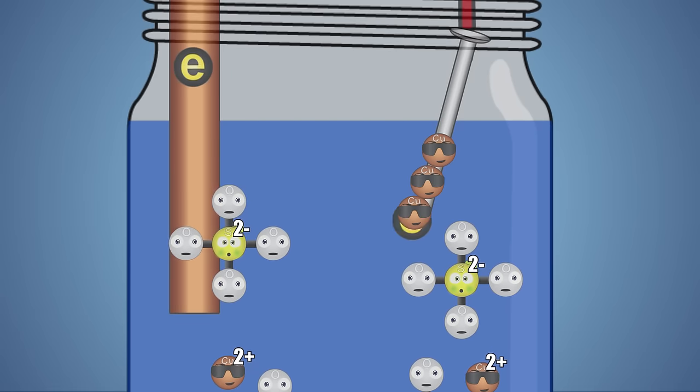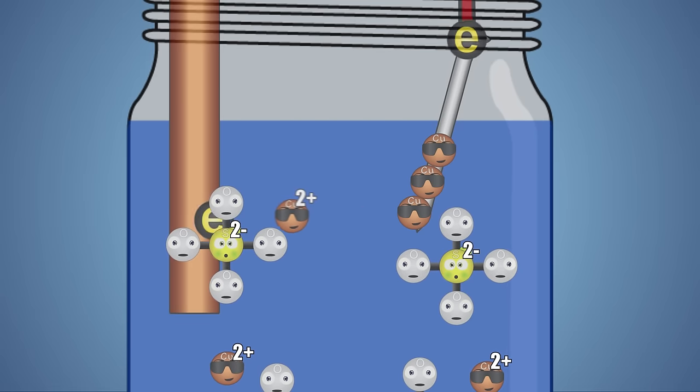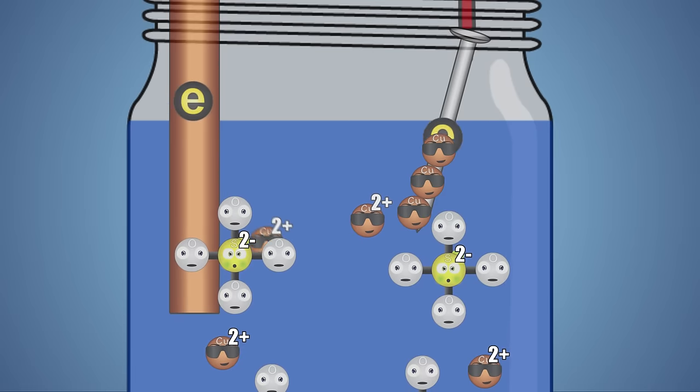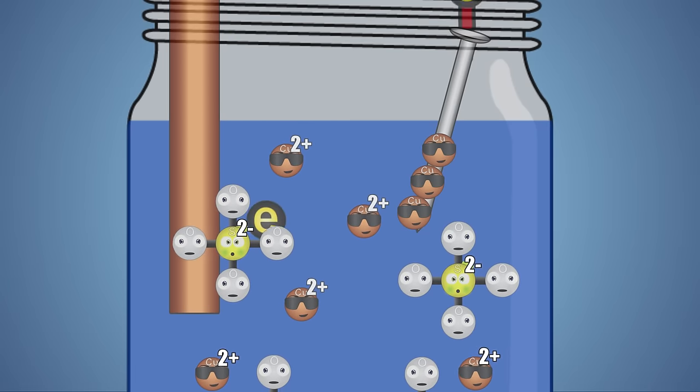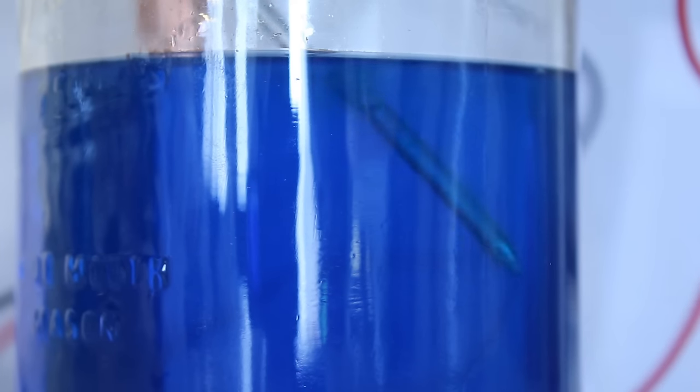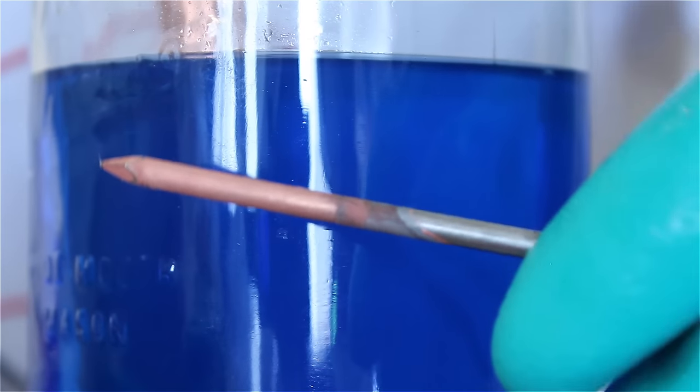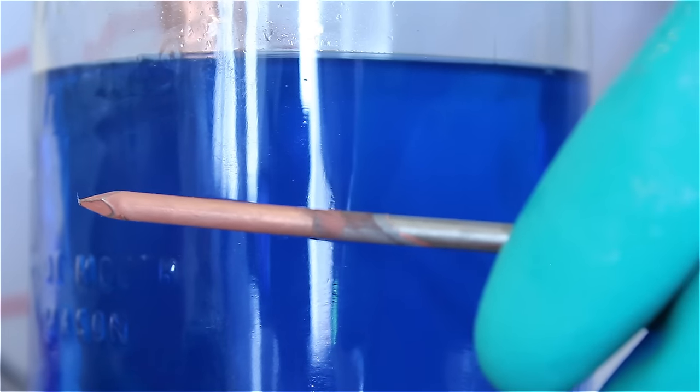The copper ions that leave the solution need to be replaced. The replacement copper comes from the copper pipe, which slowly releases copper ions into the solution to maintain a copper sulfate solution. The longer you leave the charged nail in the solution, the more copper will attach to it. The process of coating the nail with copper is a great example of electroplating.